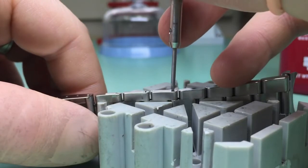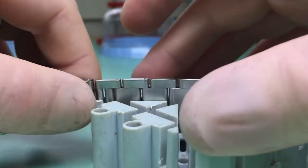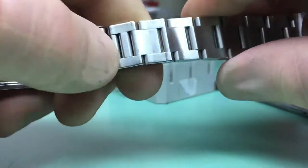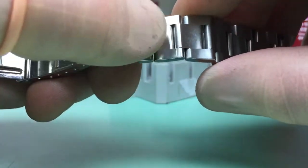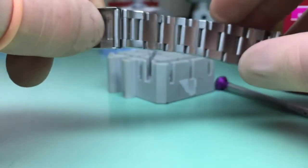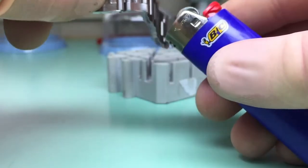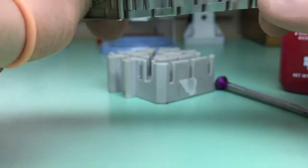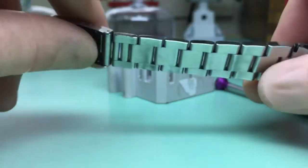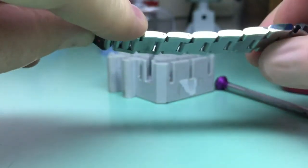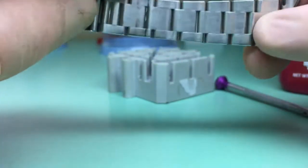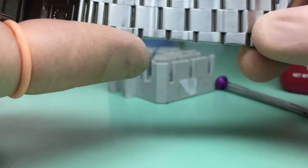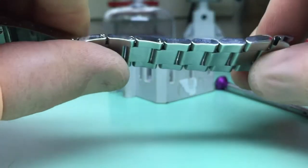Now before we start unscrewing, we need to remove the old Loctite, because if we try to unscrew the watch without removing it, we can slip and scratch the watch. So this is what we need the lighter for. We get the lighter near the thread, because Loctite is always applied at the thread. On a Rolex bracelet, the thread is at the opposite end of the screw head like a standard screw. This isn't the case with all bracelets—sometimes, like on a Cartier bracelet, the thread is up by the screw head.